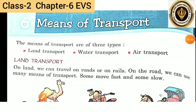Welcome to class 2. This is the division of chapter 6 EBS and the topic is means of transport. The means of transport are of three types: land transport, water transport and air transport.